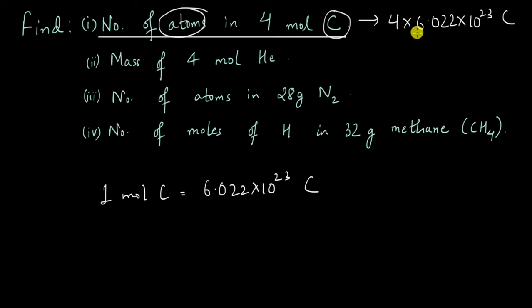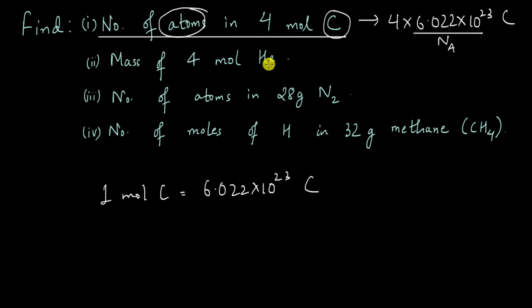That is it. All we needed to do was multiply Avogadro's number by the number of moles — 4 — to find the number of atoms. Let's move on to the next question.